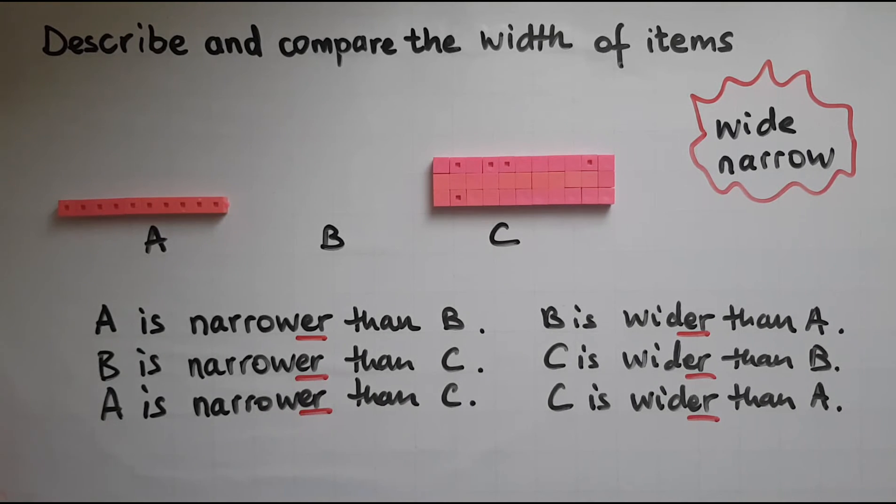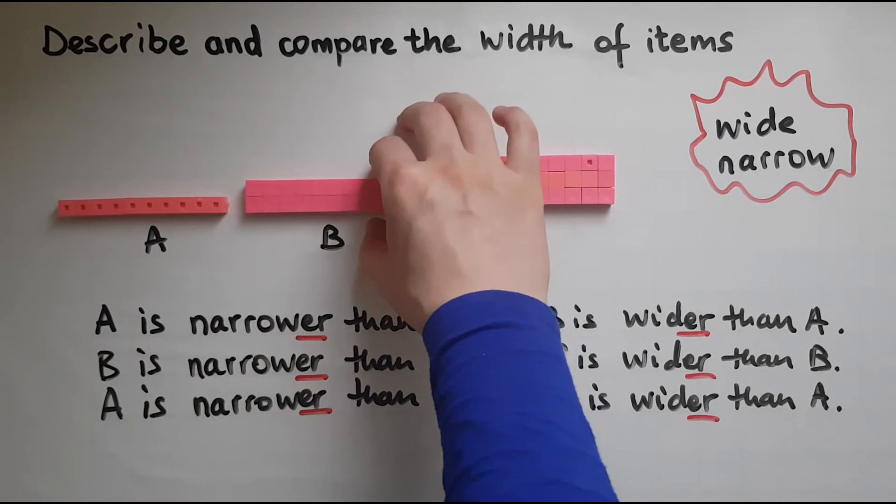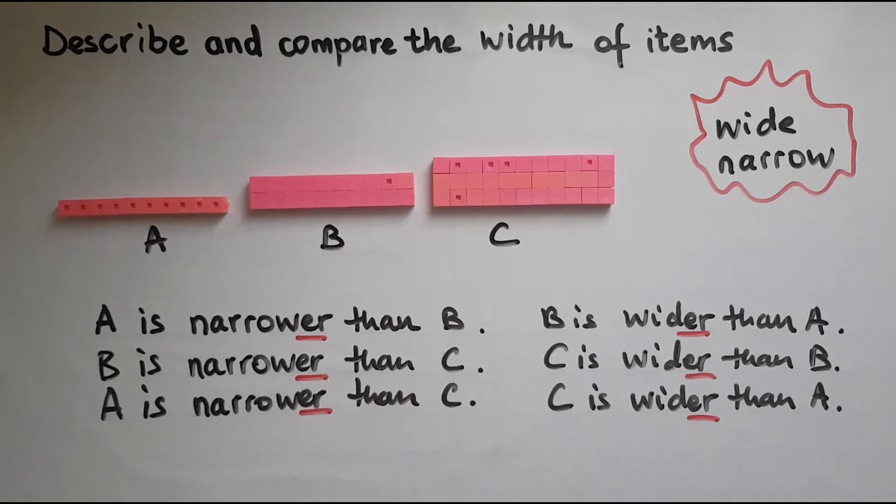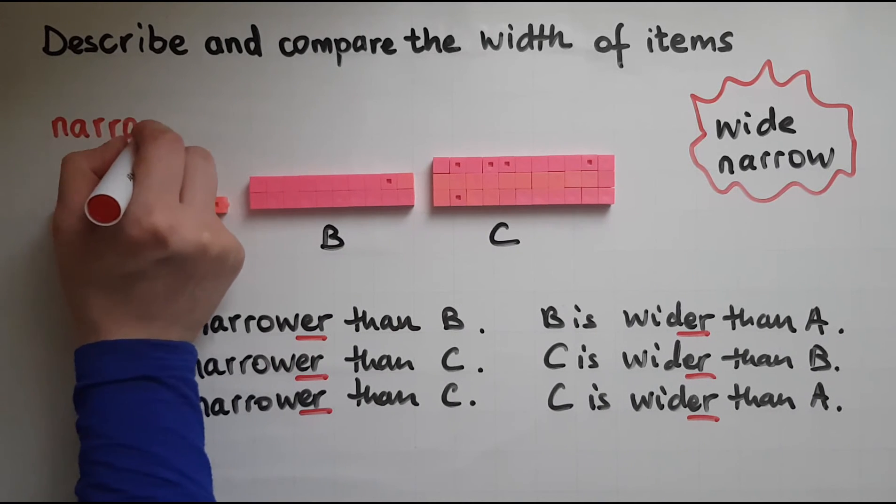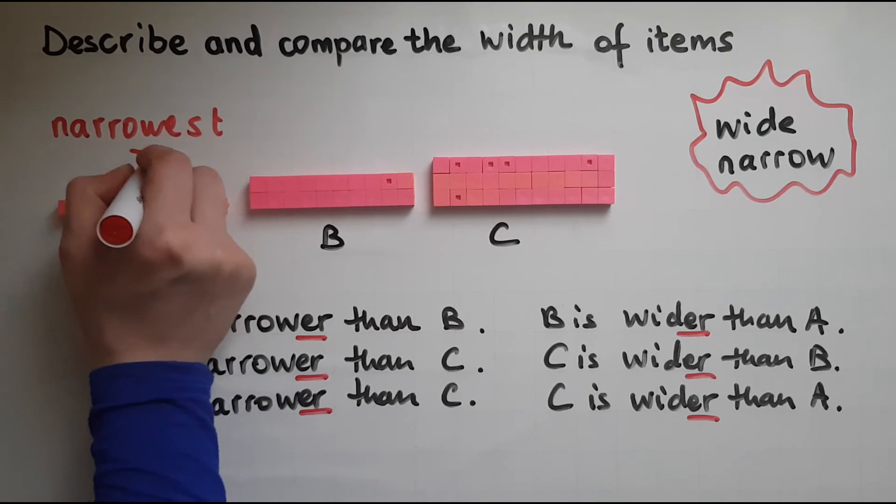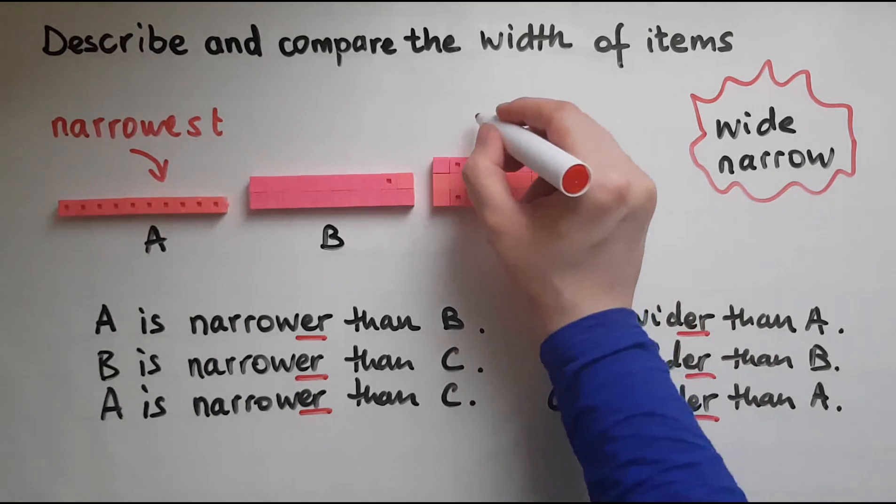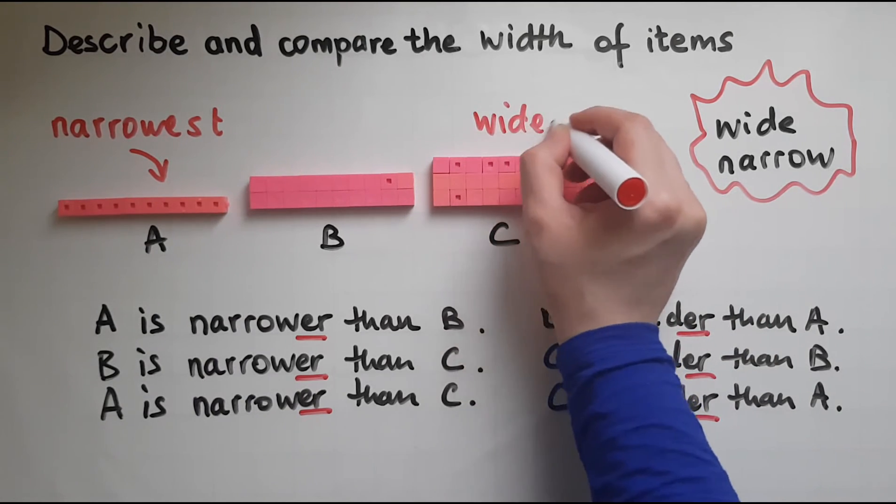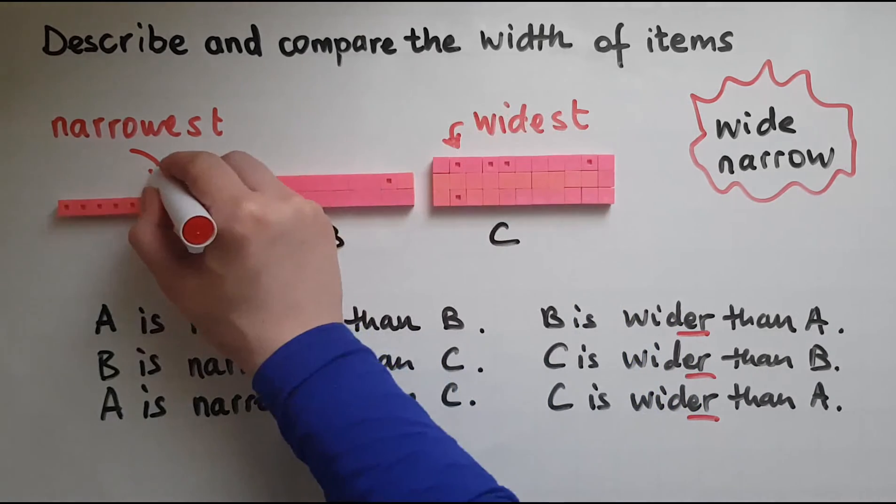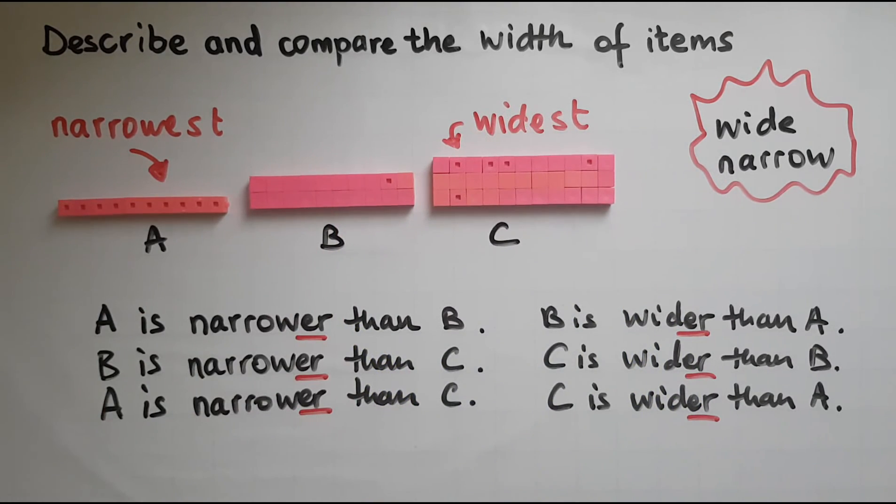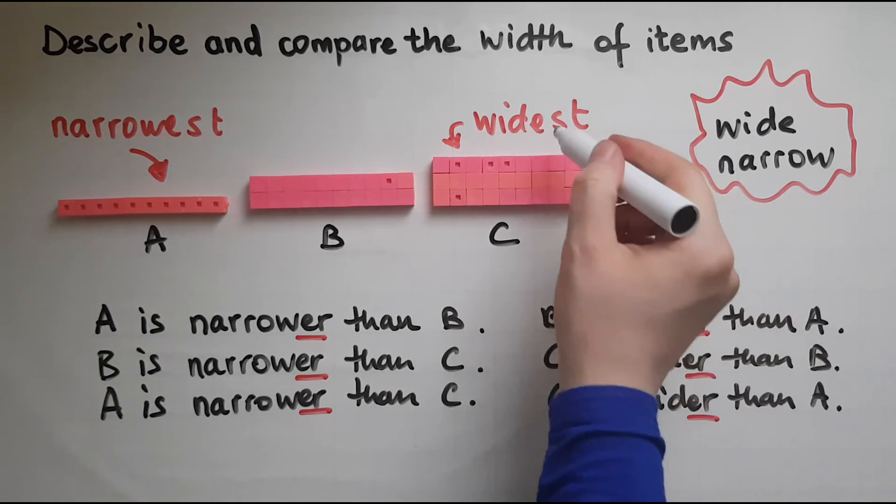Whereas if we compare the three items, the narrowest is this one and the widest is this one. So we use that -est ending.